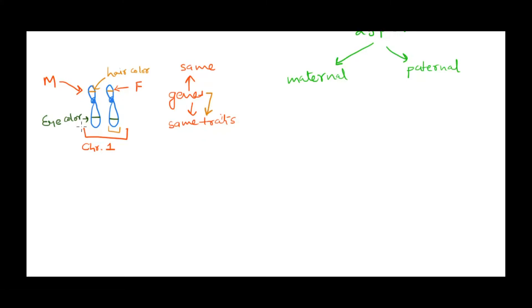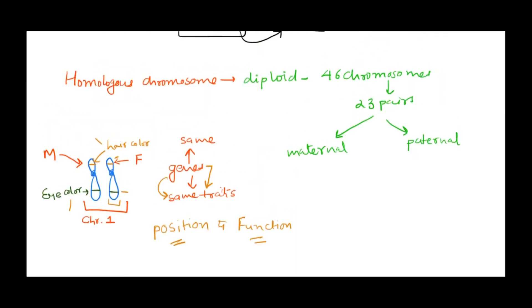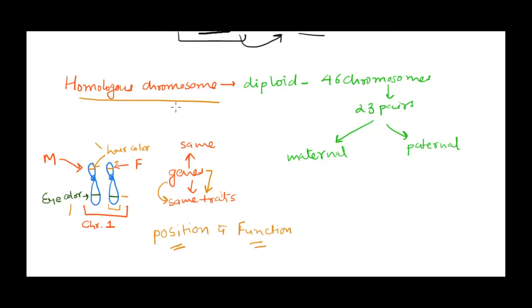On the other chromosome — because it is also chromosome number one — the eye color gene would be present at exactly the same position, and hair color gene at the same position too. So we use the term homologous with reference to position and also function, because both chromosomes contain genes that code for the same traits. Homologous chromosomes contain genes for the same trait at the same position — this is true for the pair.